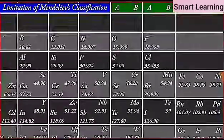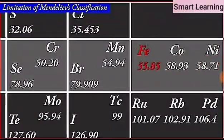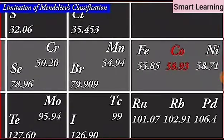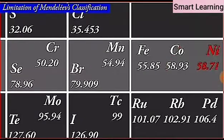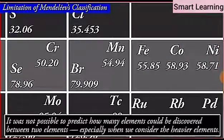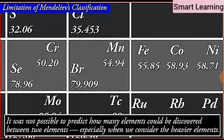Another problem was that the atomic masses do not increase in a regular manner in going from one element to the next. So, it was not possible to predict how many elements could be discovered between two elements, especially when we consider the heavier elements.